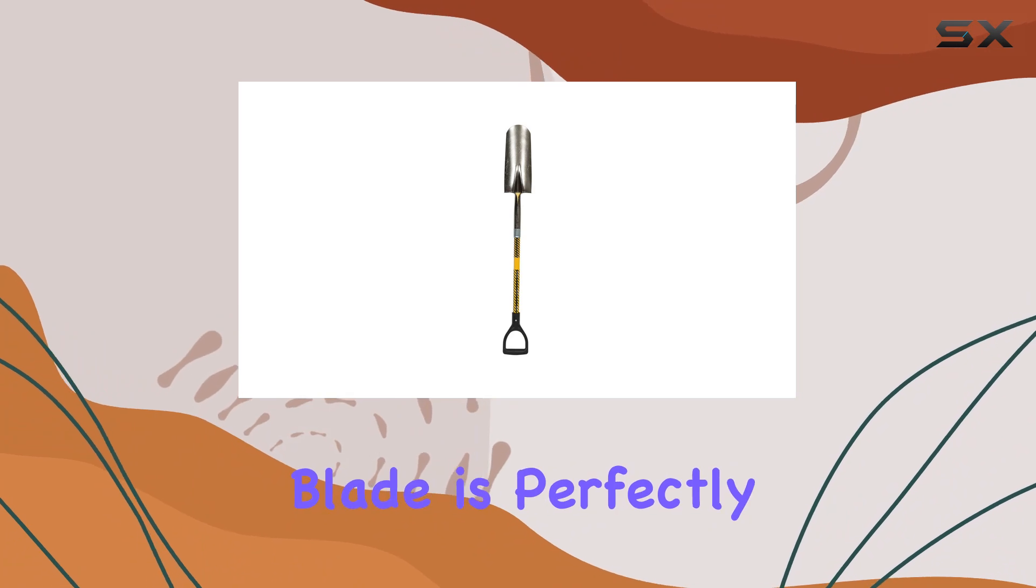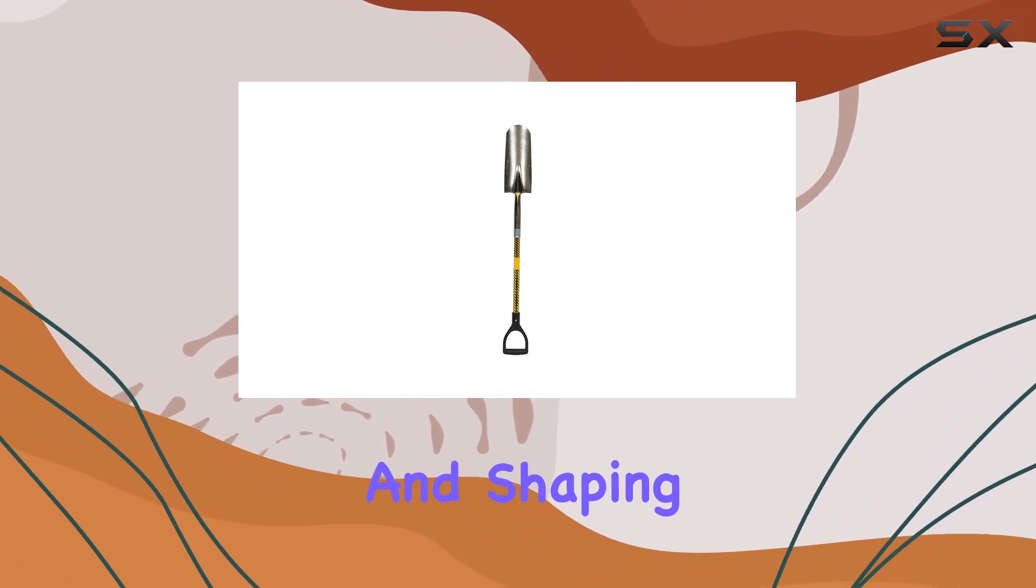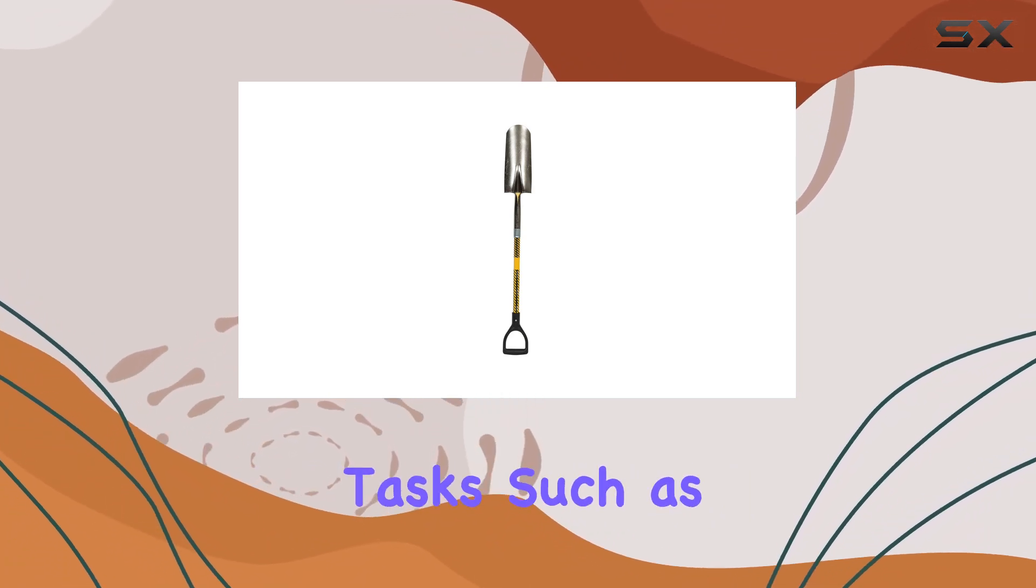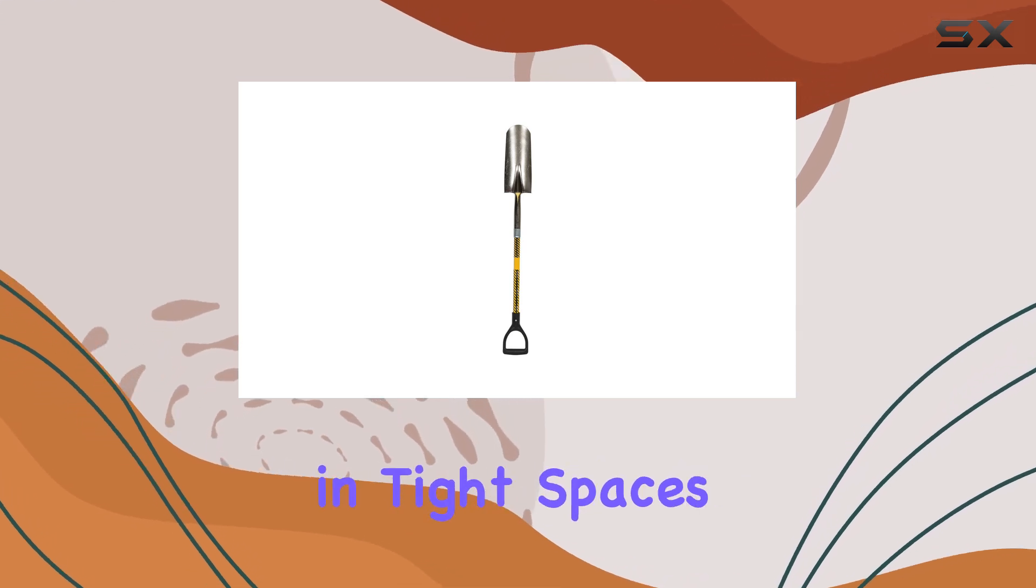The 14-inch blade is perfectly suited for digging and shaping soil, making it ideal for tasks such as clearing drainage ditches or planting in tight spaces.